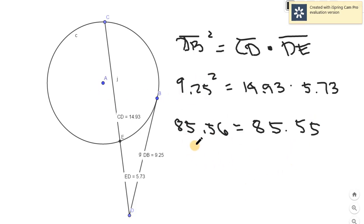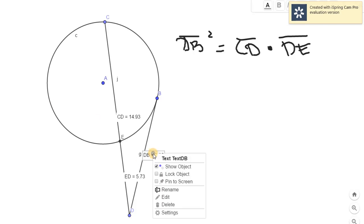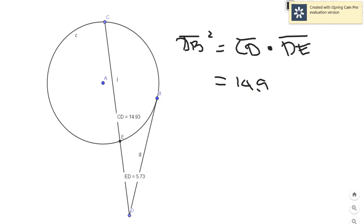And lastly, the use of this one is if you have something that is missing, you can look for it. Say that we don't know the value of 9.25, so we can solve for it if you just simply get the square root. Say you don't know this value, the only thing that you have is 14.93 times 5.73, and you know that this is DB squared. Get the square root of this one: the square root of 14.93 times 5.73, the answer is 9.24, that is DB.